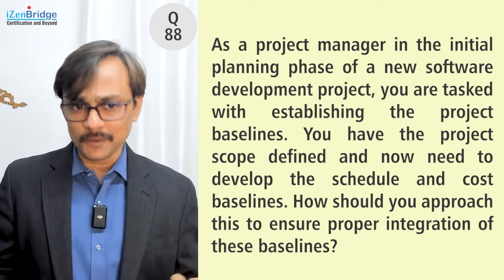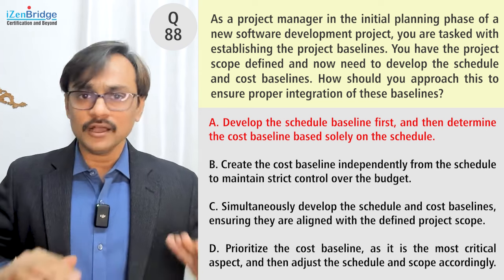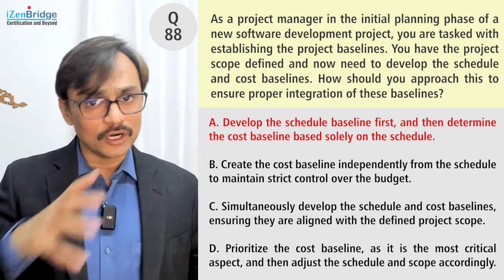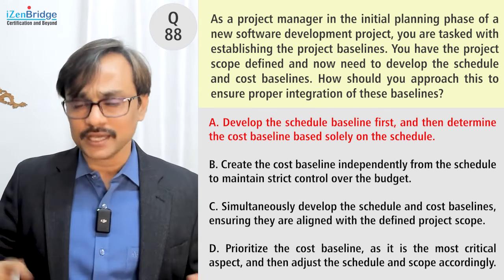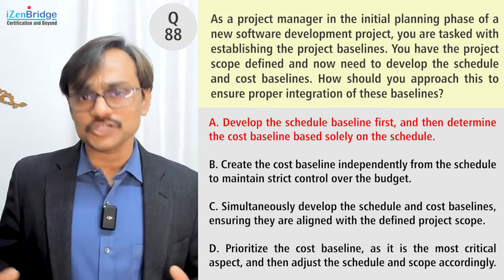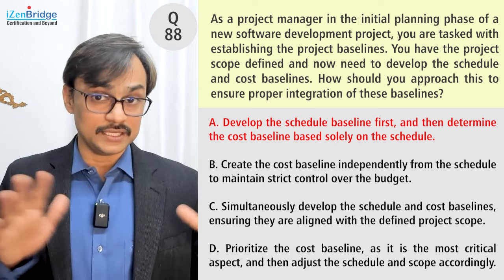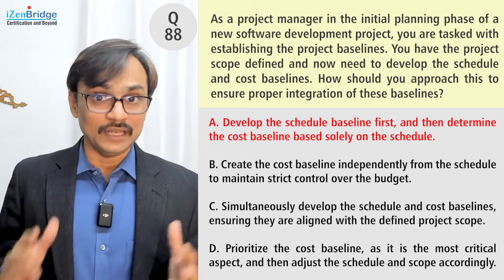Option A: develop the schedule baseline first, and then determine the cost baseline based solely on the schedule. This approach says: break the scope into a work breakdown structure, identify the activities, sequence them, build the project schedule, get approval on the schedule, and then look at cost.